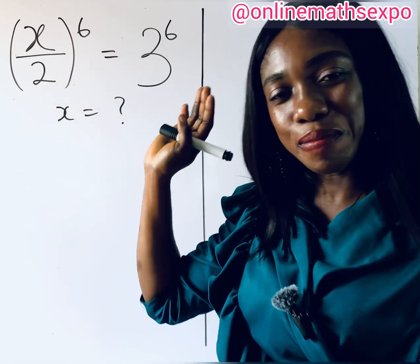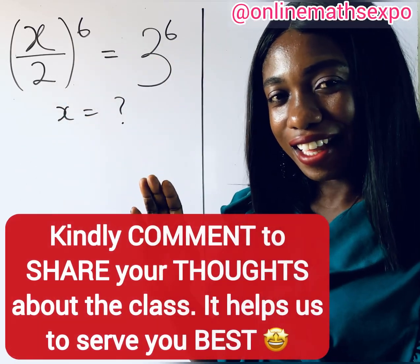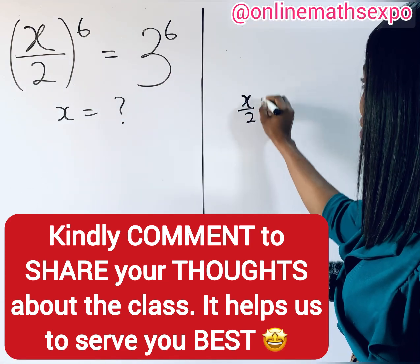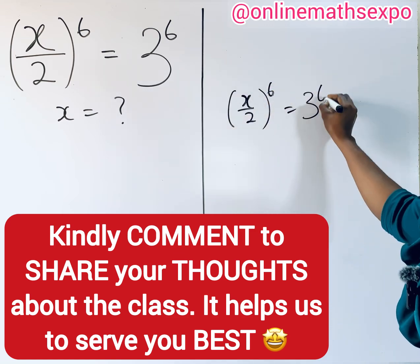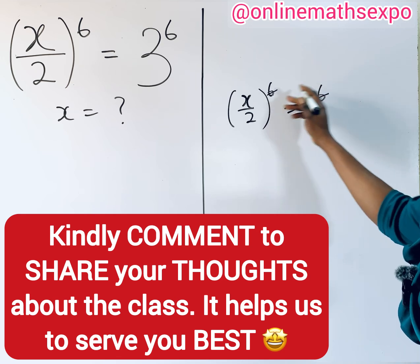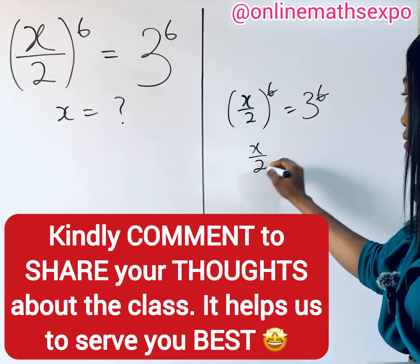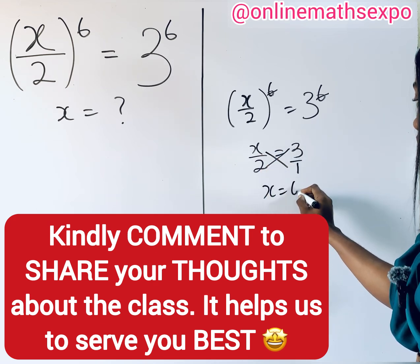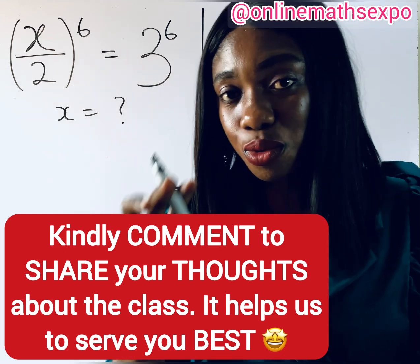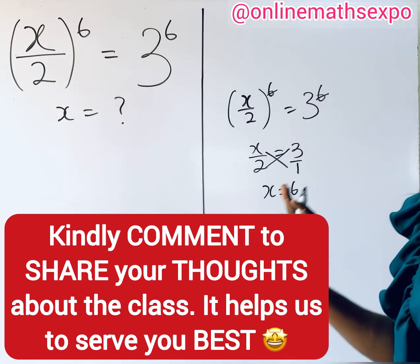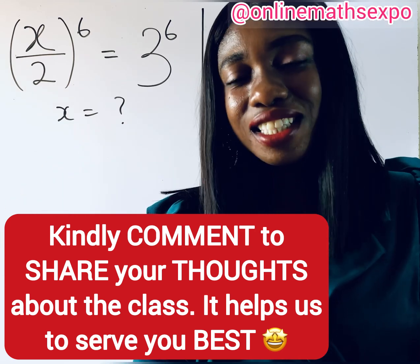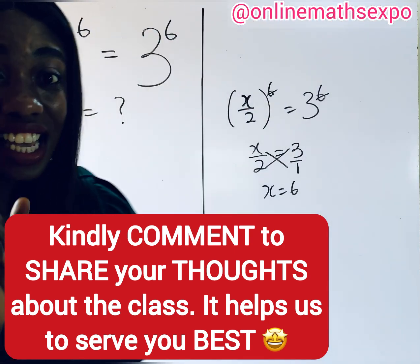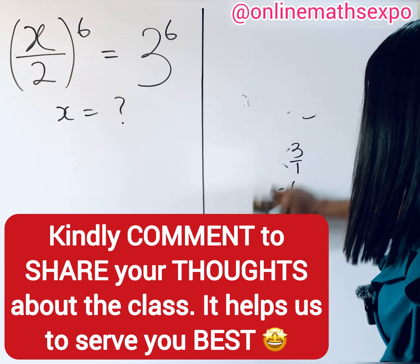Let's solve this tricky math olympiad equation together. When you see this kind of question, are you the type that would just say x divided by 2, raised to the power of 6, is equal to 3 to the power of 6, take away the powers since they're the same, and say x divided by 2 equals 3, then cross multiply to get x = 6? Please don't be too quick to conclude that x is 6 only — there are other values of x. Join me as I teach you how to solve this kind of question.